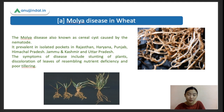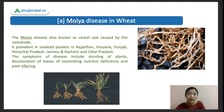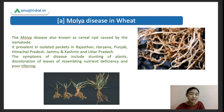Heterodera avenae is also known as the cereal cyst nematode - this is a very important point to note. This Moller disease is very prevalent in Rajasthan, Haryana, Punjab, Himachal Pradesh, Jammu and Kashmir, and Uttar Pradesh. A question can come from this, so please note it down.